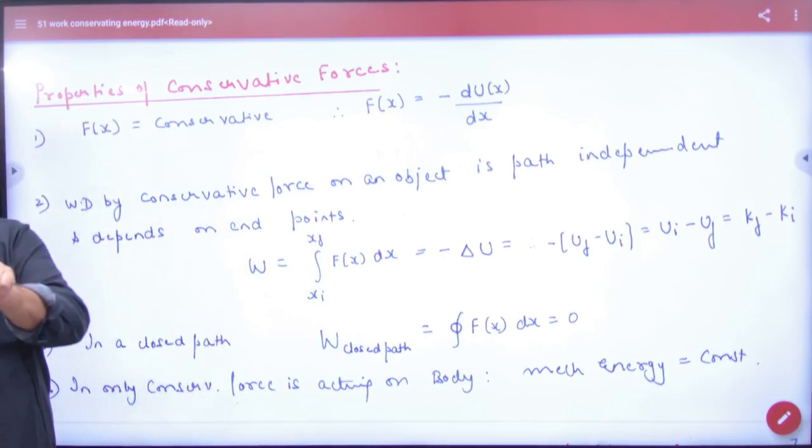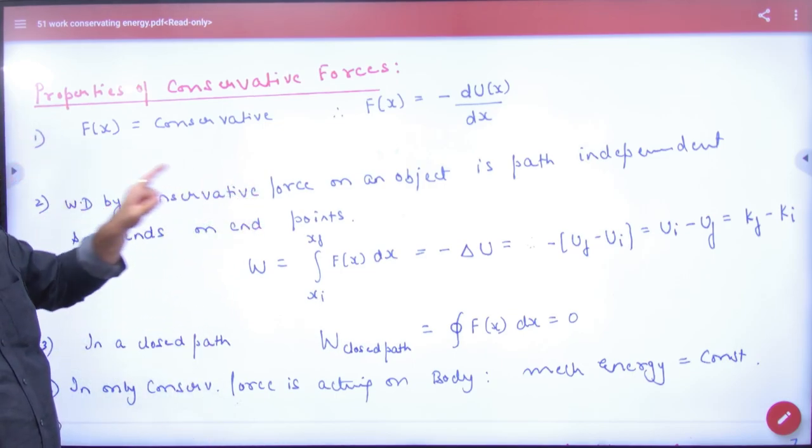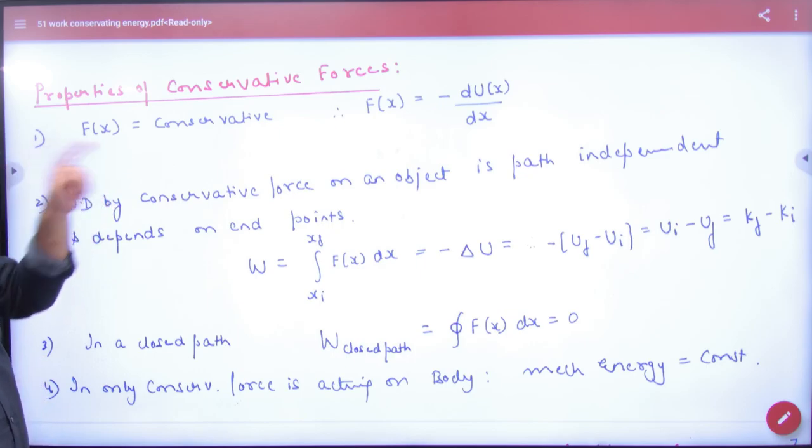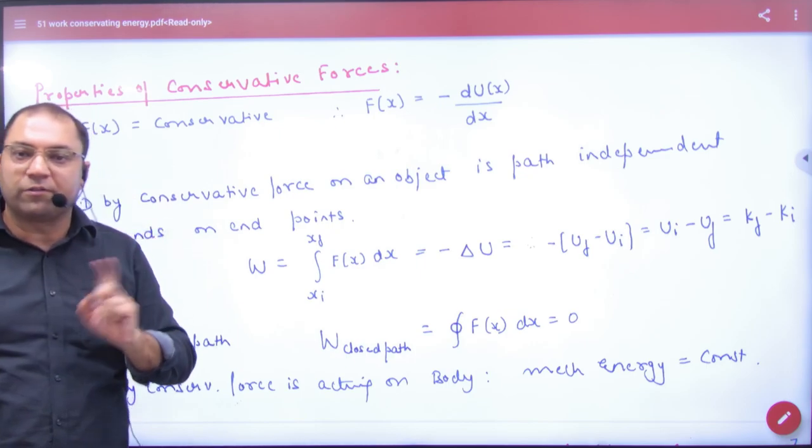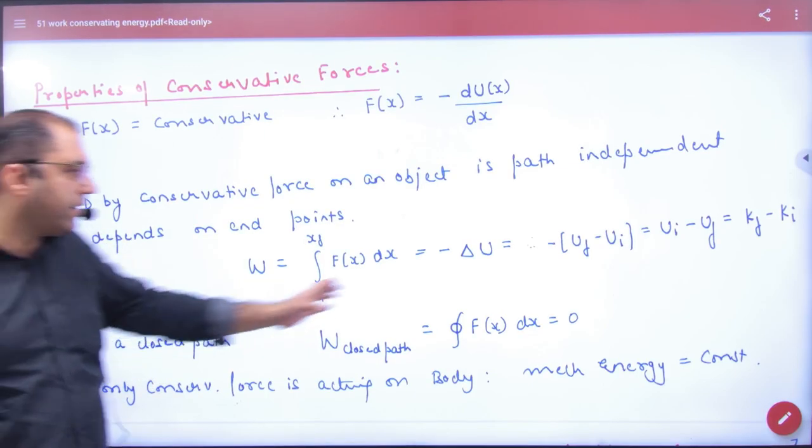Any conservative force, second property: work done by conservative force on an object is path independent. It doesn't depend on the path; it depends on the initial and final position, which is sufficient.